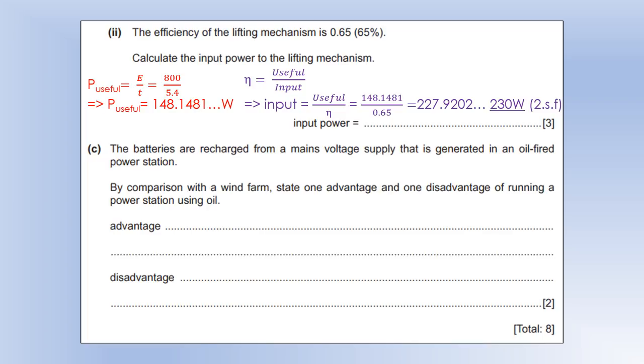So the batteries are recharged from a mains voltage supply that is generated at an oil-fired power station. By comparison with a wind farm, state one advantage and one disadvantage of running a power station using oil. So the main advantage of oil is you don't depend on the weather. Wind turbines only work when it's windy, so oil is more reliable because we can demand it whenever we want.